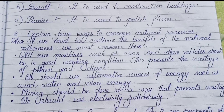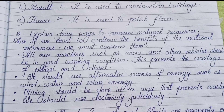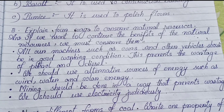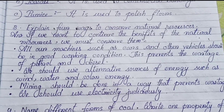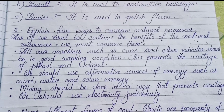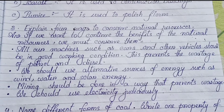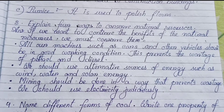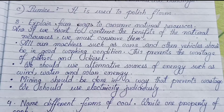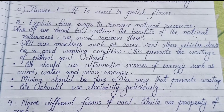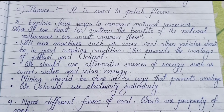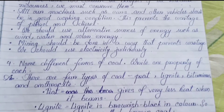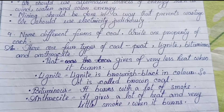Number three: Explain four ways to conserve natural resources. If we want to continue benefiting from natural resources, we must conserve them. All machines such as cars and vehicles should be in good working condition to prevent wastage of petrol and diesel. We should use alternative sources of energy such as wind, water, and solar energy. Mining should be done in a way that prevents wastage. We should use electricity judiciously.